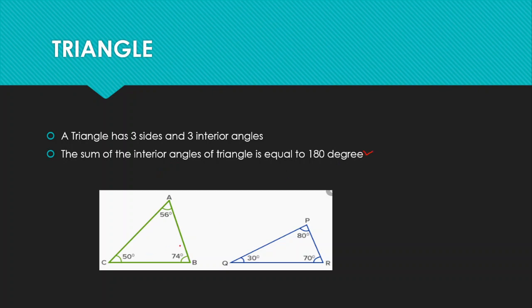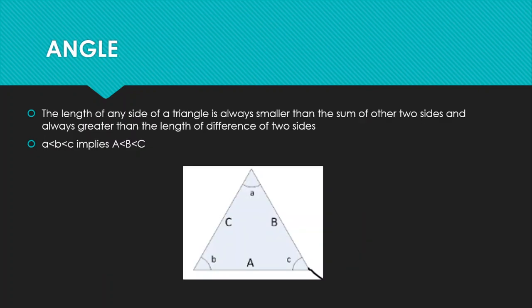Here we have three angles and if we sum them we get 180 degrees. Similarly, if we sum these three angles we will get 180 degrees. So the sum of the interior angles of a triangle is always equal to 180 degrees.